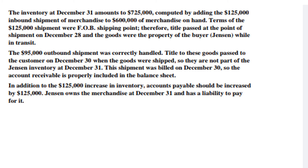The other $195,000 outbound shipment was correctly handled because title to these goods has passed to the customer under the same FOB shipping point terms. So when goods were shipped, they are no longer part of Jensen's inventory at December 31st. This shipment was billed on December 30th, so accounts receivable is properly included in the balance sheet. Additionally, accounts payable should be increased by $125,000, since Jensen owes payment to its supplier.